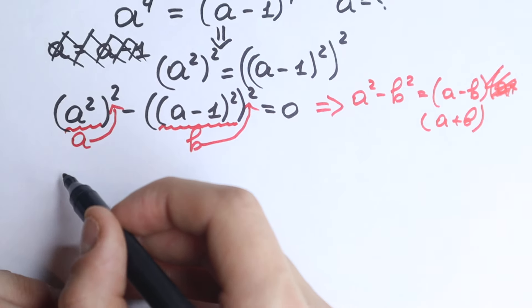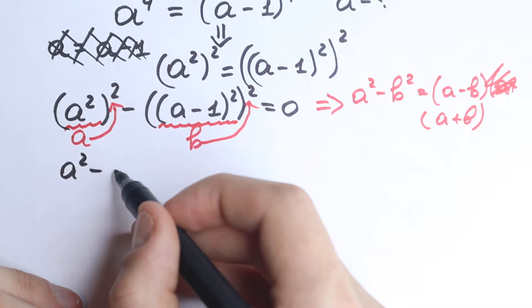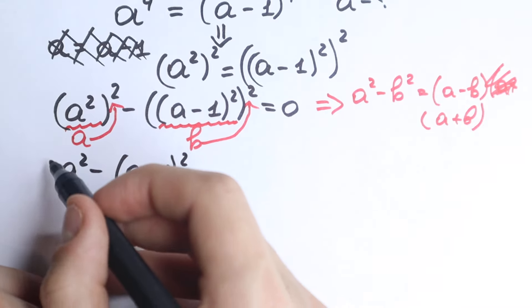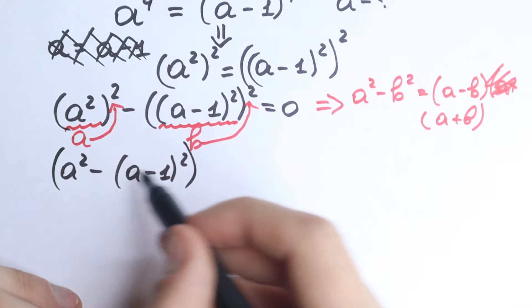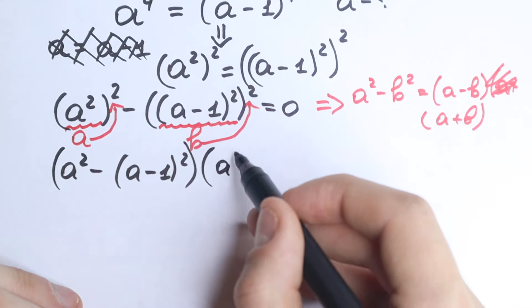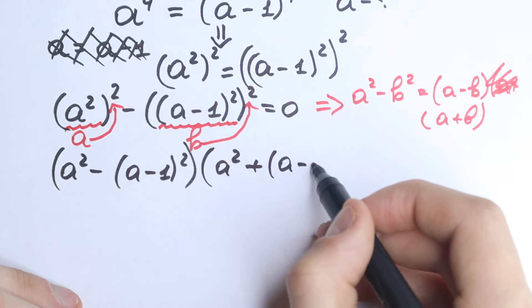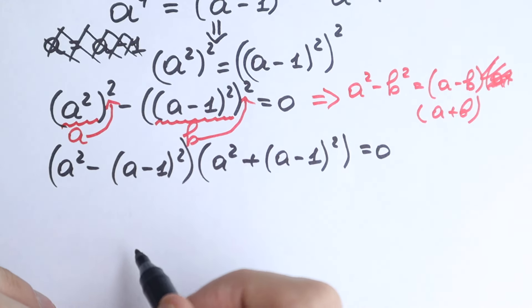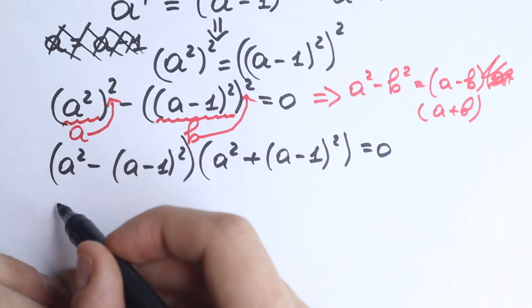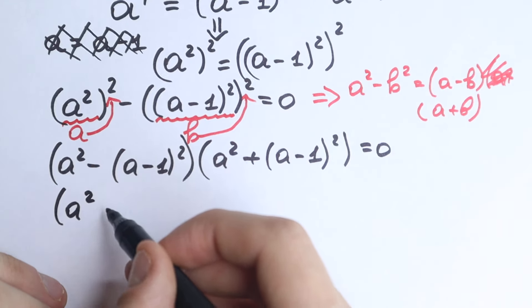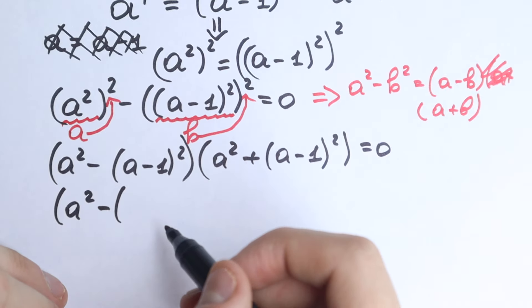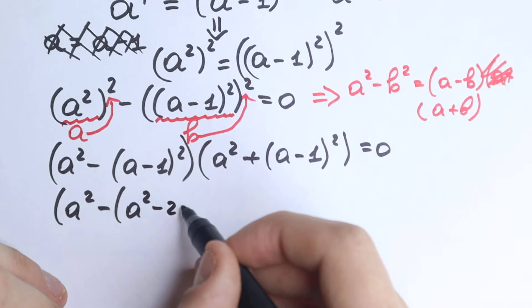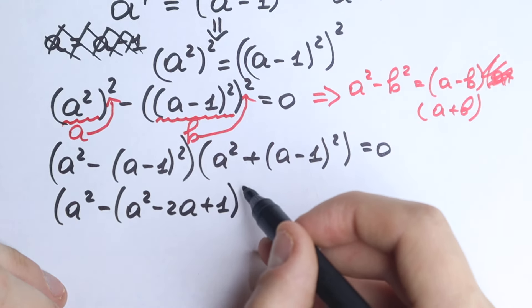So let's apply that formula here. We write a-squared minus a-minus-one-squared as the first factor, and a-squared plus a-minus-one-squared as the second factor, all equal to zero. Now for the first parenthesis: a-squared minus a-minus-one-squared. Using the identity a minus b squared equals a-squared minus two-a plus one, we expand to get a-squared minus a-squared minus two-a plus one.